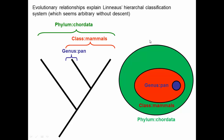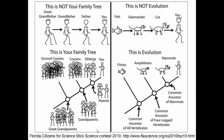The evolutionary process provided an explanation for the nested set pattern that had been known for a long time — one of the first great accomplishments of evolutionary biology. Now, a cartoon from a science contest illustrates a common misconception about family trees or phylogenetic trees. On the left is the misconception of showing a linear sequence of ancestors to the present — that's a particular lineage, not a family tree.